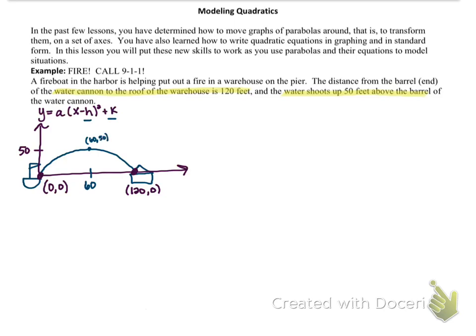So we can use this to plug into our graphing form of a quadratic for h and k. So we will have y equals a times (x minus 60) squared plus 50.